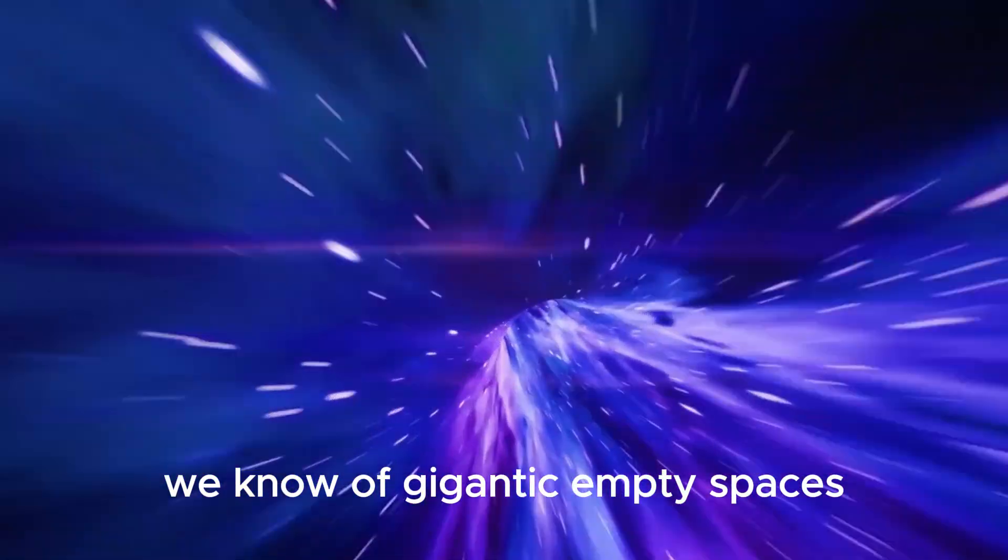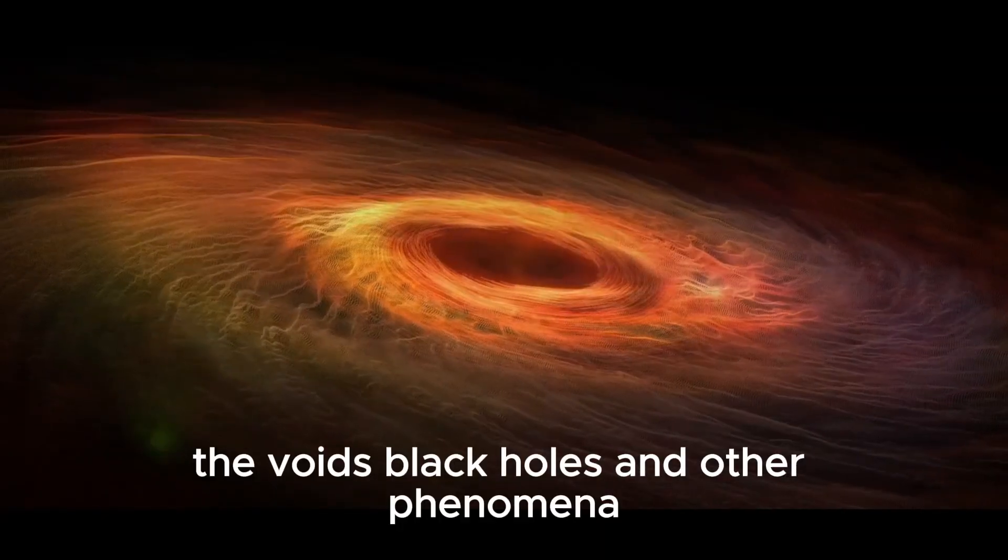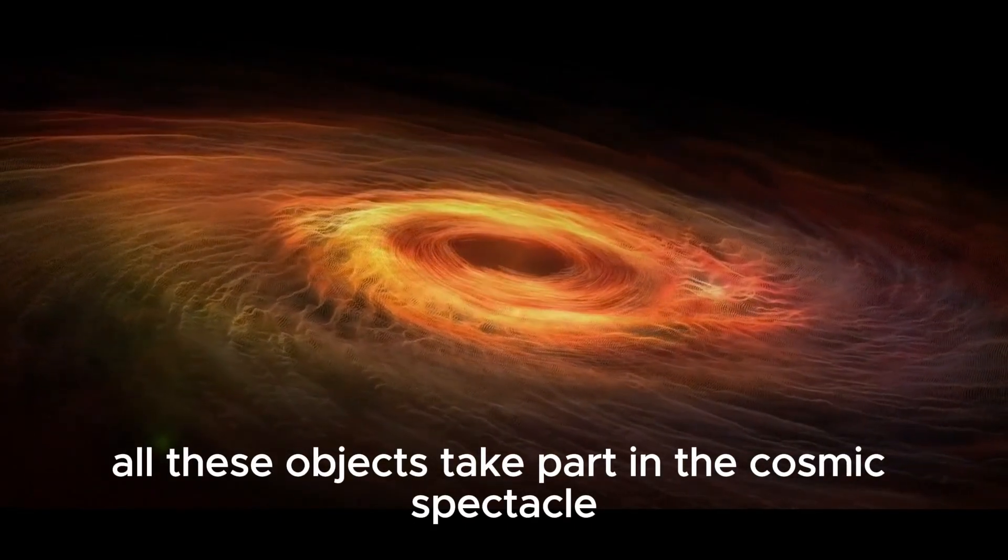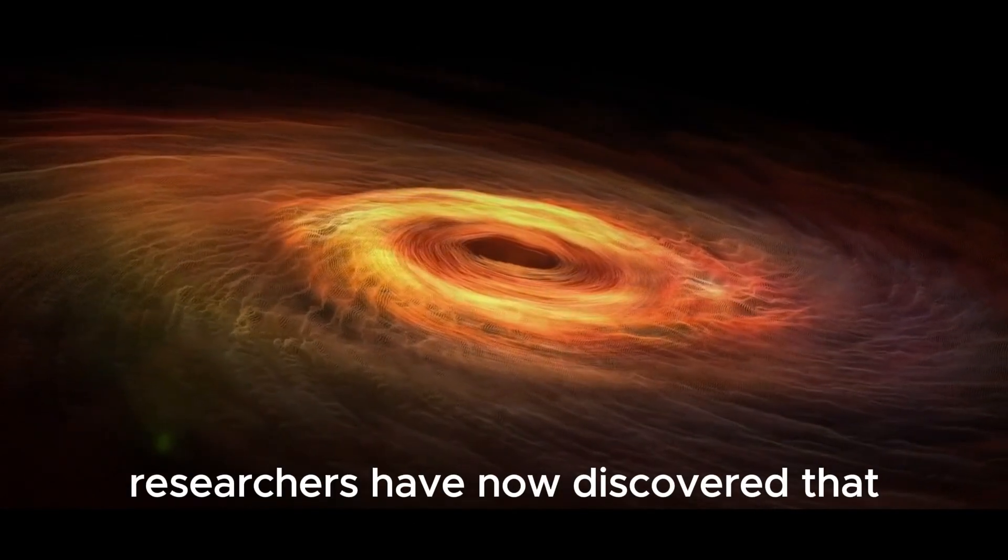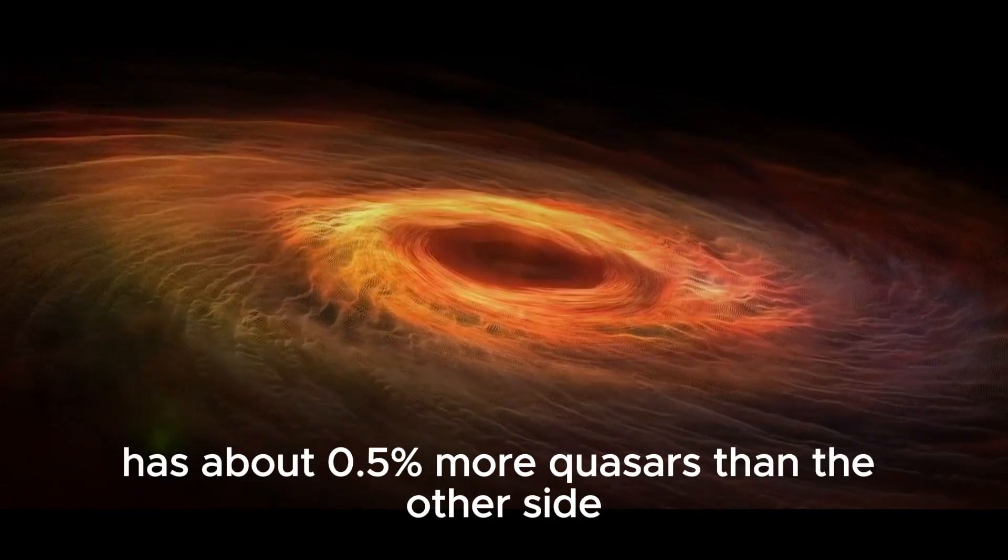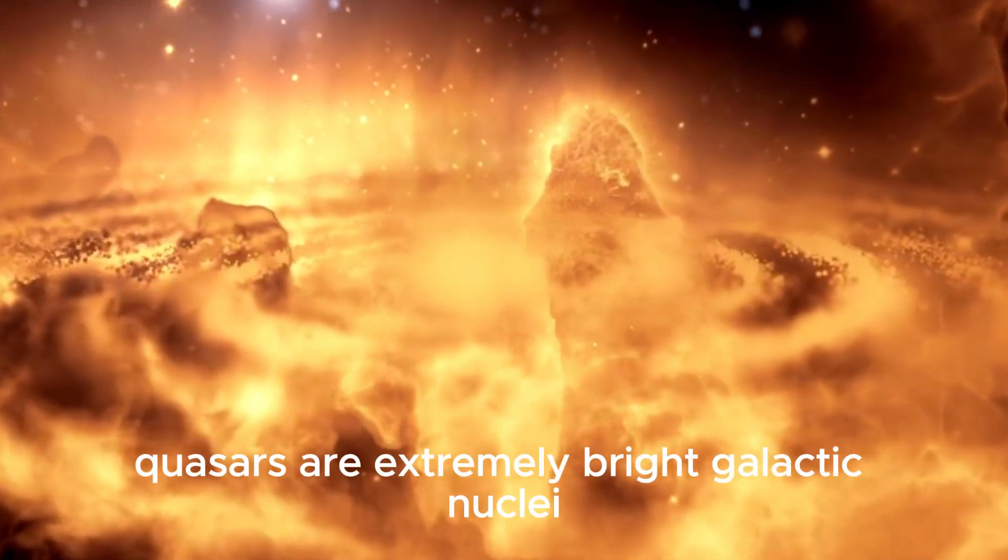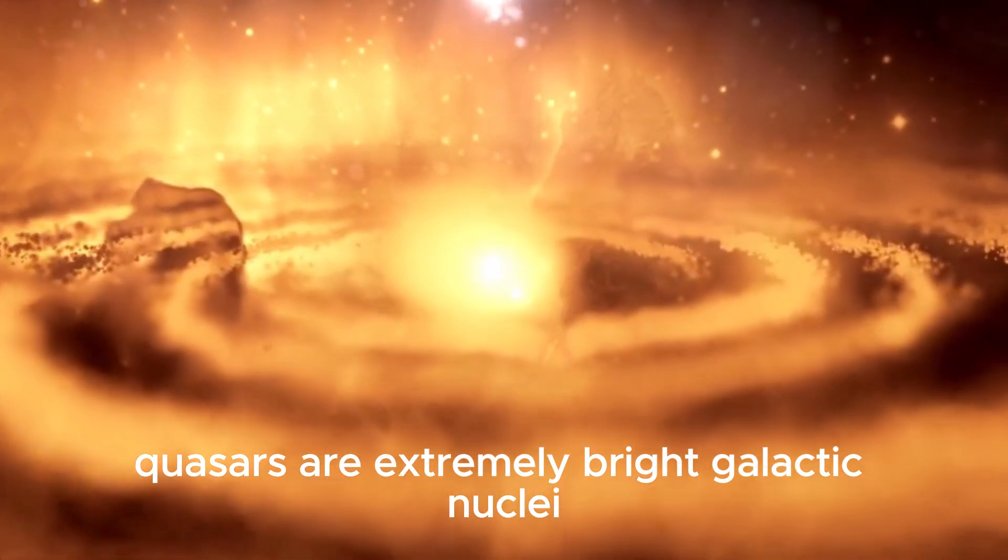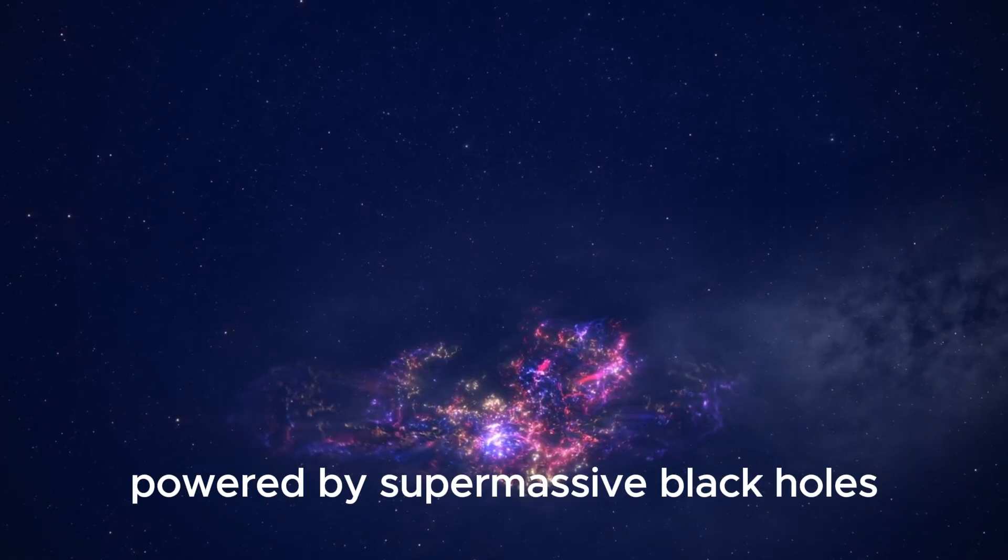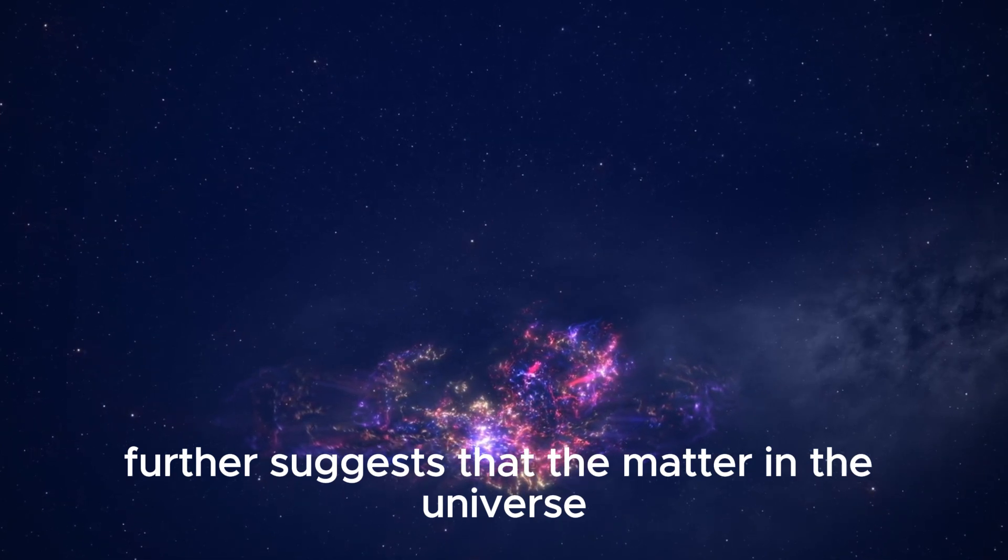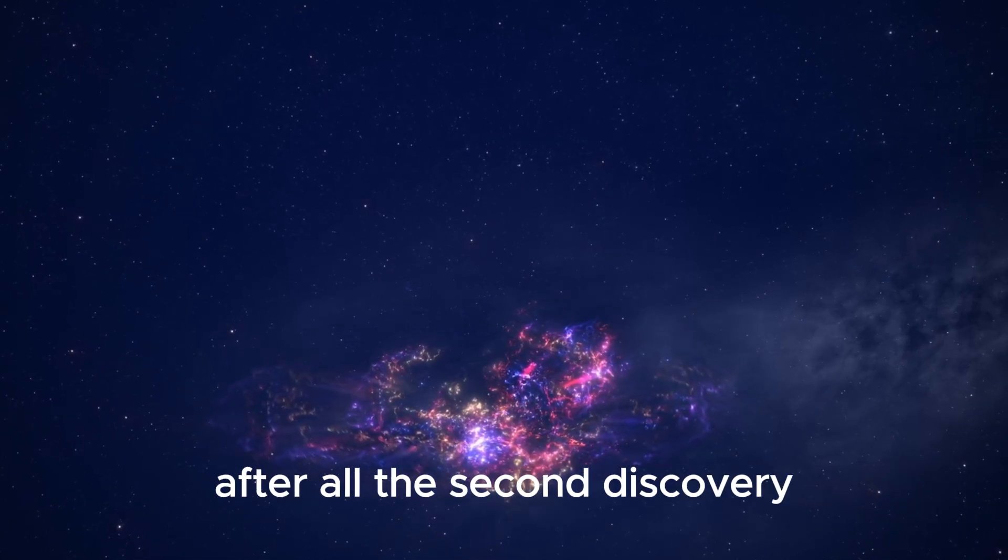We know of gigantic empty spaces, the voids, black holes, and other phenomena. Researchers have now discovered that one side of the sky has about 0.5% more quasars than the other side. Quasars are extremely bright galactic nuclei powered by supermassive black holes. This uneven distribution further suggests that the matter in the universe is not evenly distributed after all.